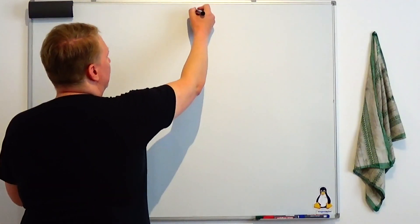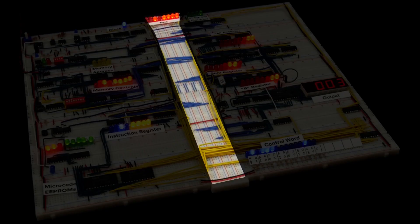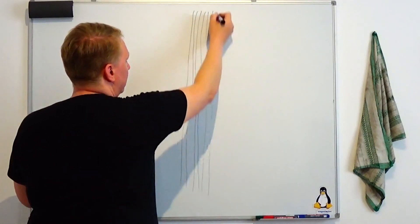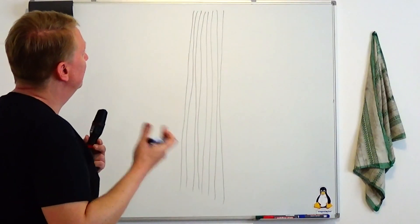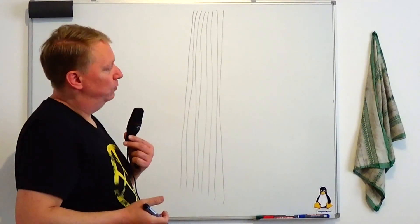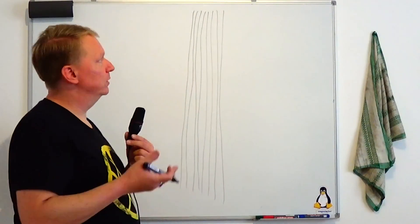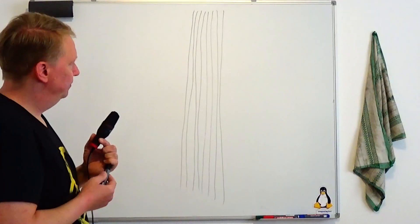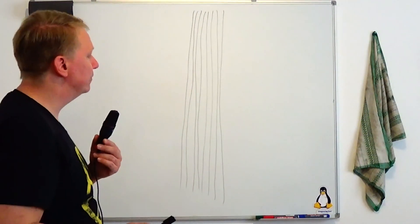The main thing in a CPU is the so-called bus, and a bus is just a bunch of wires. Here I have eight wires. The number of wires is the number of bits of the CPU — an 8-bit CPU would have eight wires, a 16-bit CPU would have 16 wires, a 32-bit CPU would have 32 wires, and a 64-bit CPU would have 64 wires. This is the main communication line between the different parts of the CPU.